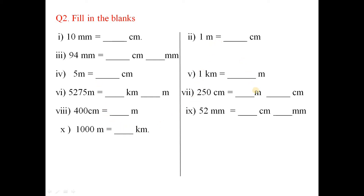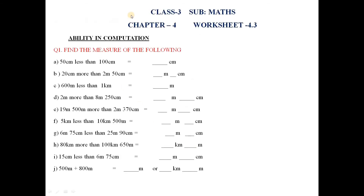Now it is Worksheet 3: Ability in Computation. Find the measure of the following. Here, 50 centimeter less than 100 centimeter — 'less than' means you have to subtract. So 100 minus 50 equals 50 centimeter.